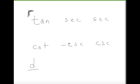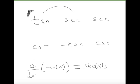So if I wanted to find the derivative of tangent of x, I start here in the corner with tangent of x, and I go secant, secant. So the derivative is secant of x times secant of x, or secant squared of x.